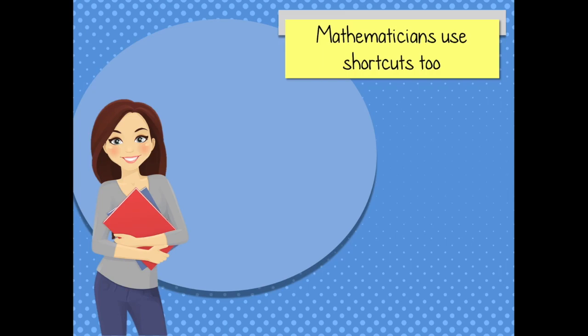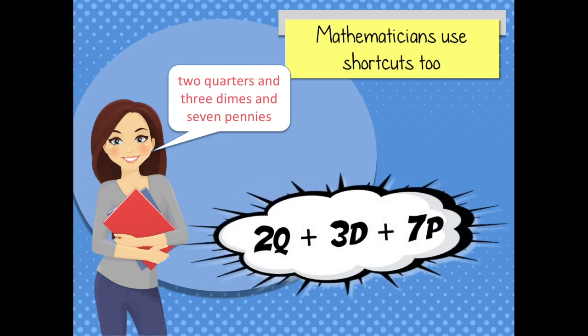Do you remember in episode one I told you that mathematicians love shortcuts. Instead of saying two quarters and three dimes and seven pennies, we can just say 2q plus 3d plus 7p. Easy.